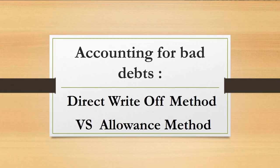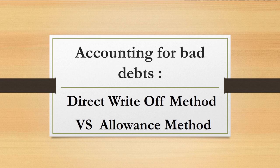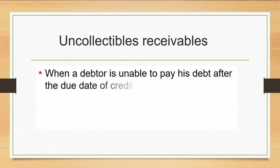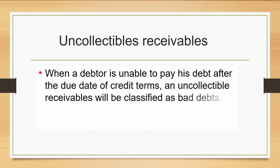Assalamu'alaikum and hello everyone. Today, I would like to discuss about accounting for bad debt. There are two methods to record accounting for bad debt: the direct write-off method and the allowance method. First of all, you must know what is the meaning of uncollectible receivable. When a debtor is unable to pay his debt after the due date of credit term, an uncollectible receivable will be classified as bad debts.